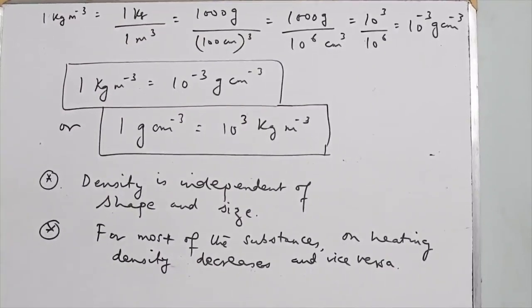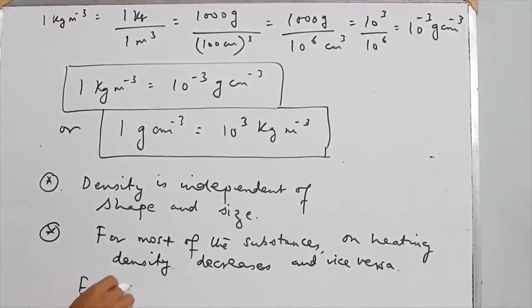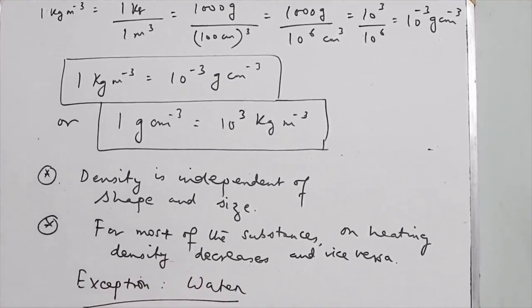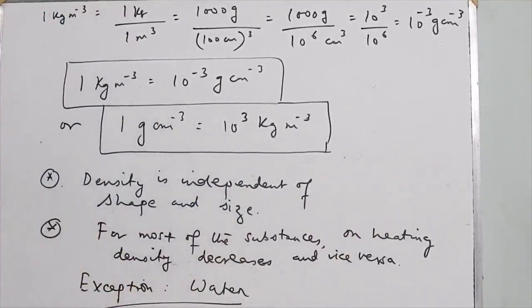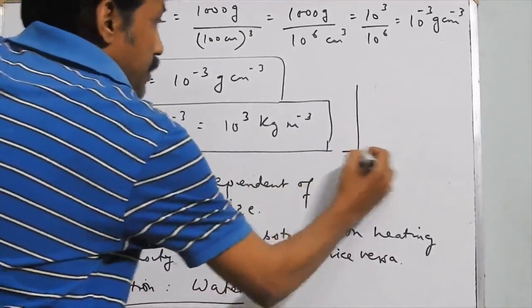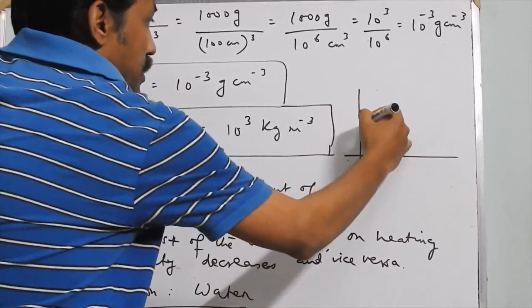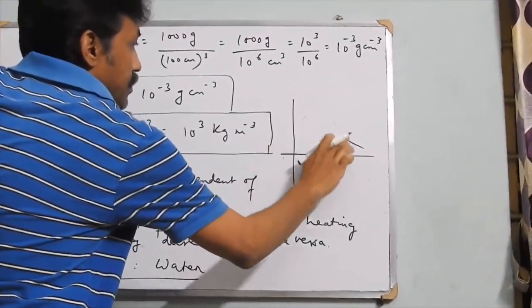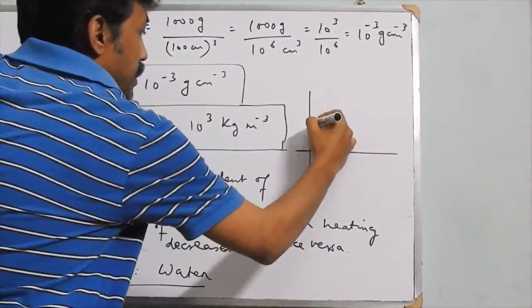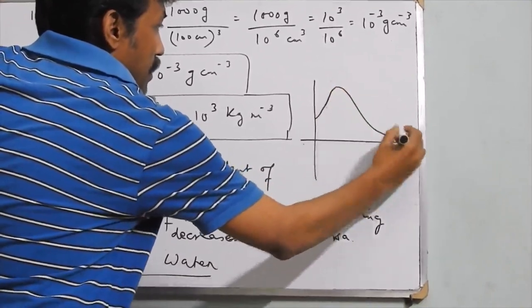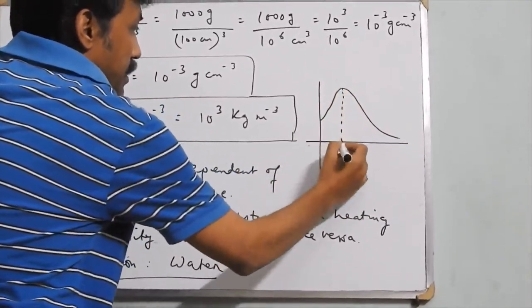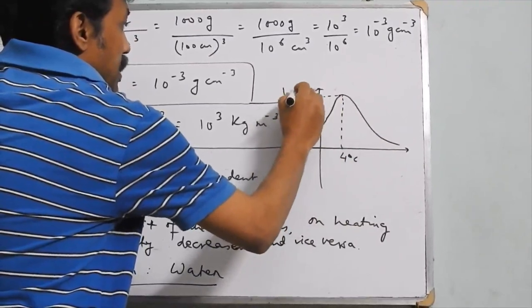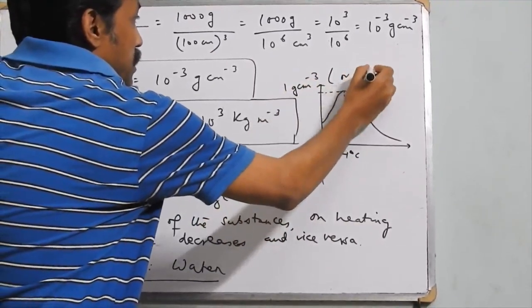An exception is water, because the density of water is maximum at 4°C. This is also called the anomalous expansion of water. We can show the variation of density with temperature through a graph, where at around 4°C the density is maximum — 1 g/cm³ or equivalently 1000 kg/m³ for water.